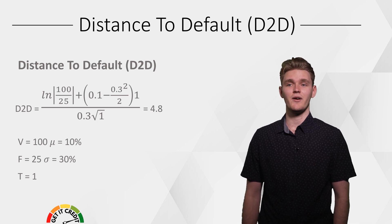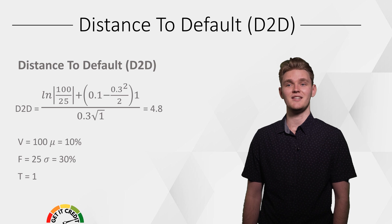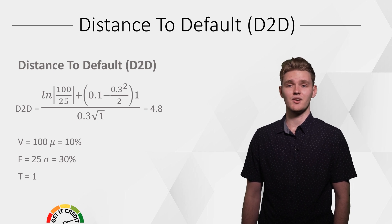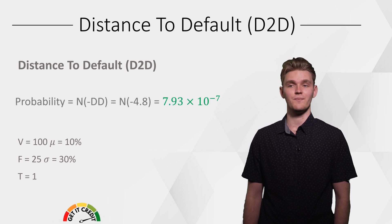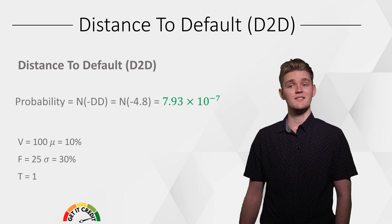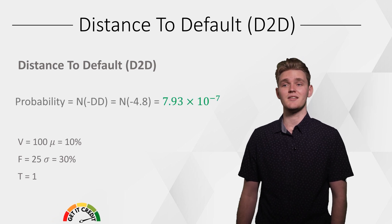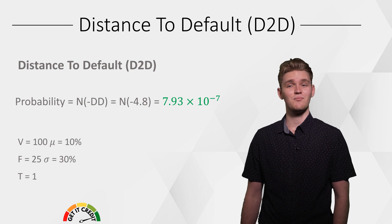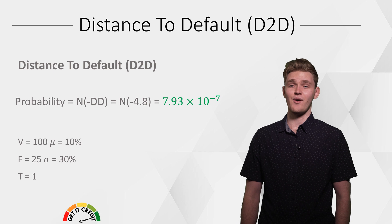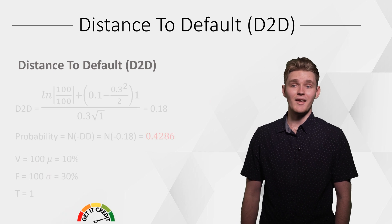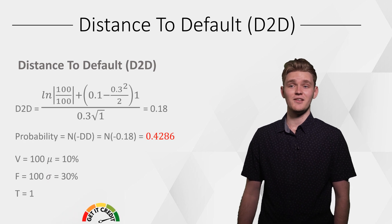We can see that this firm provides an indication of strong financial health with a D2D of 4.8. It is common for analysts to convert the D2D score into a distribution to determine a probability of default. In this scenario, we are presented with a probability of default of 7.93 × 10⁻⁷ — virtually zero.